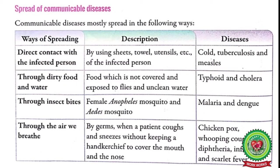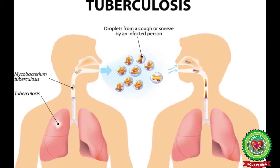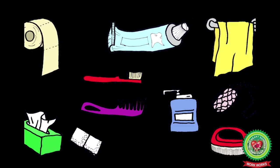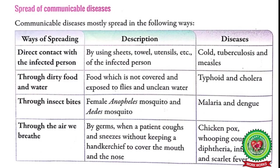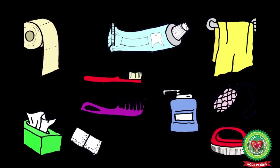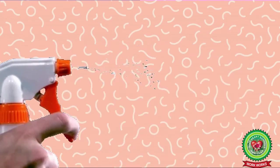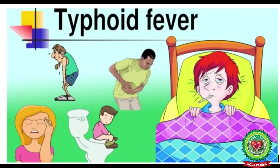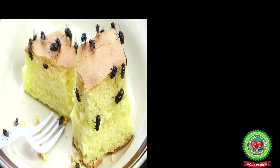Some ways of spreading communicable diseases are given in your book. Number one: diseases like cold, tuberculosis, and measles spread through direct contact with the infected person, like by using sheets, towels, or utensils of the infected person. If a person is suffering from any of these diseases, things used by him or her should be kept separate and disinfected properly to avoid the spread of disease.